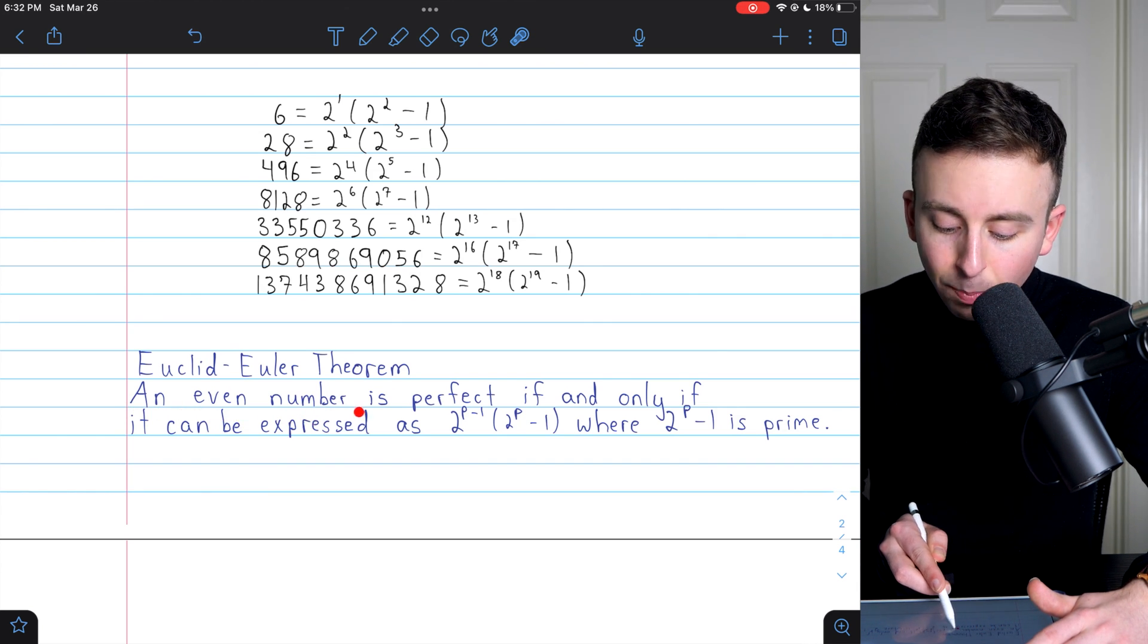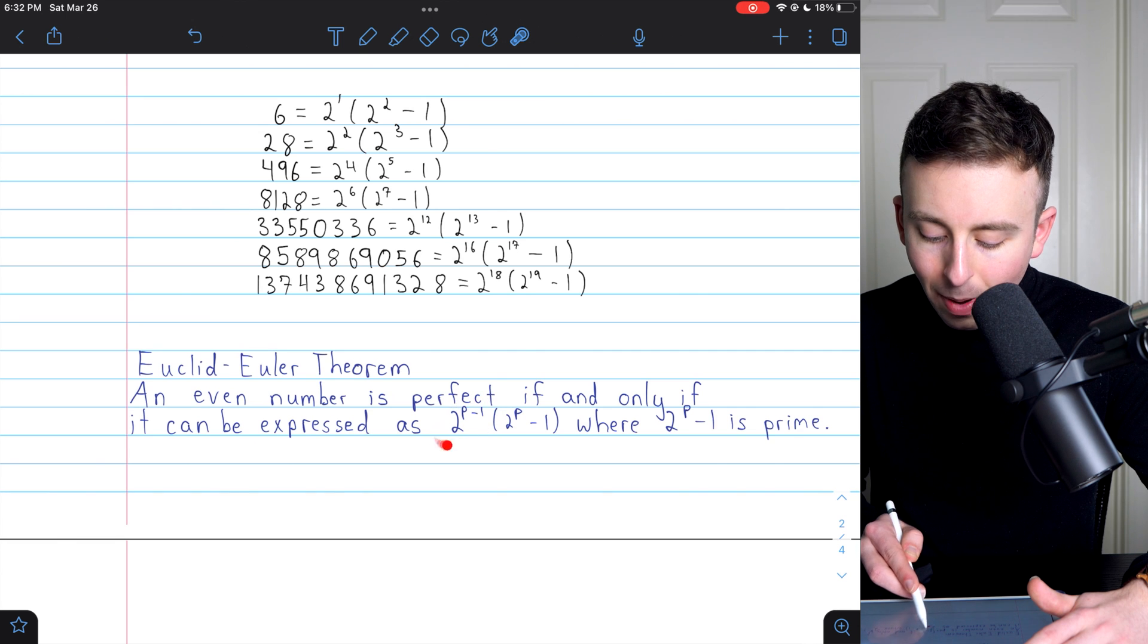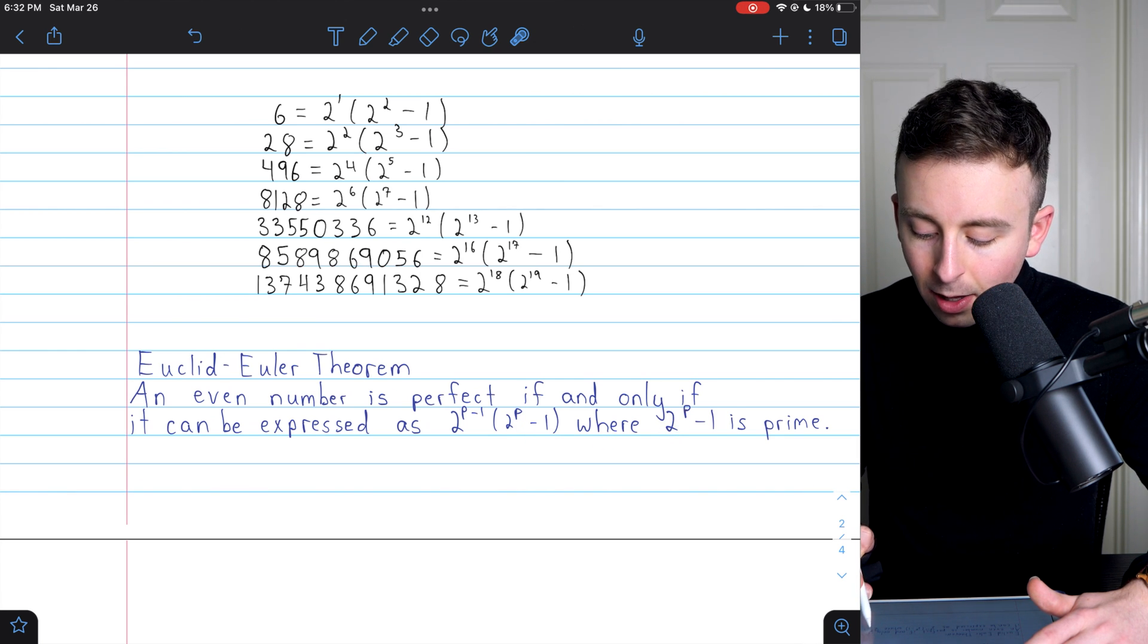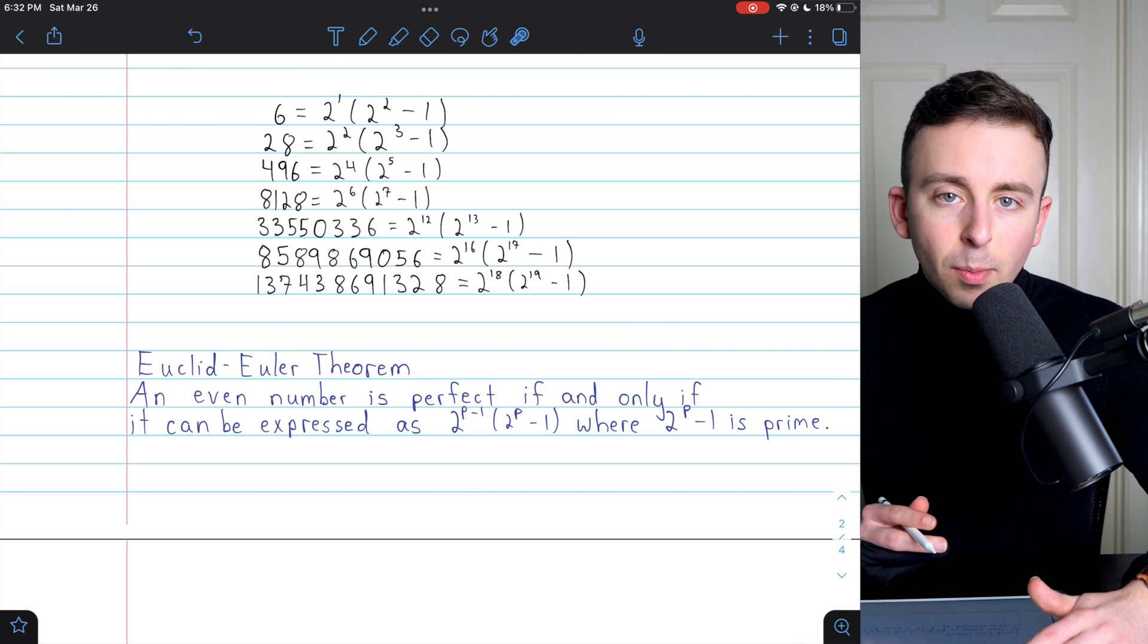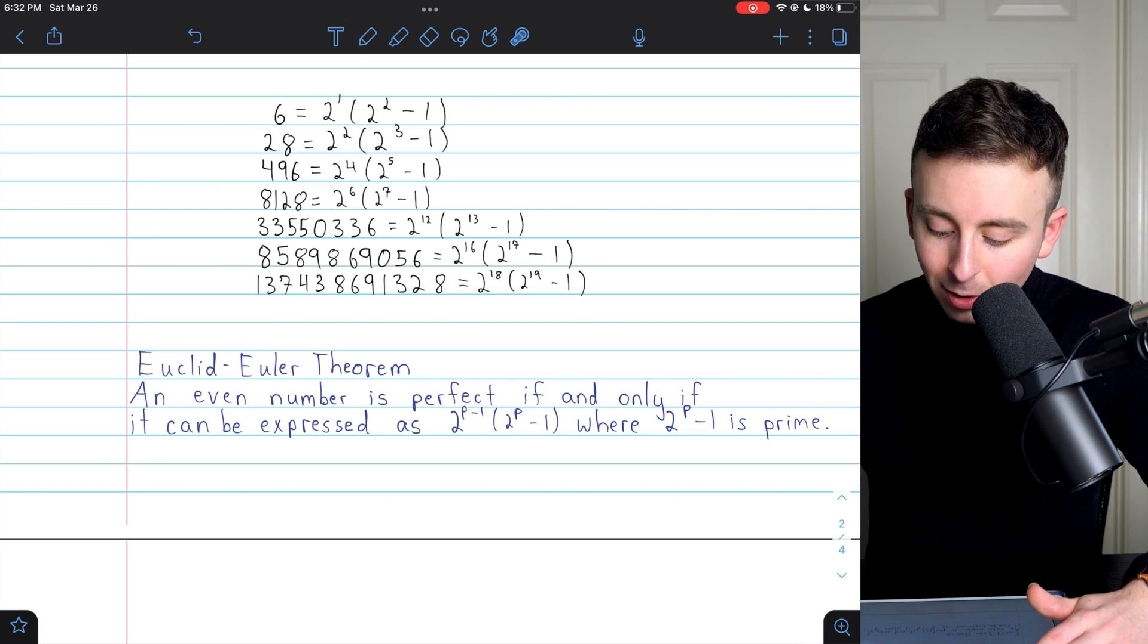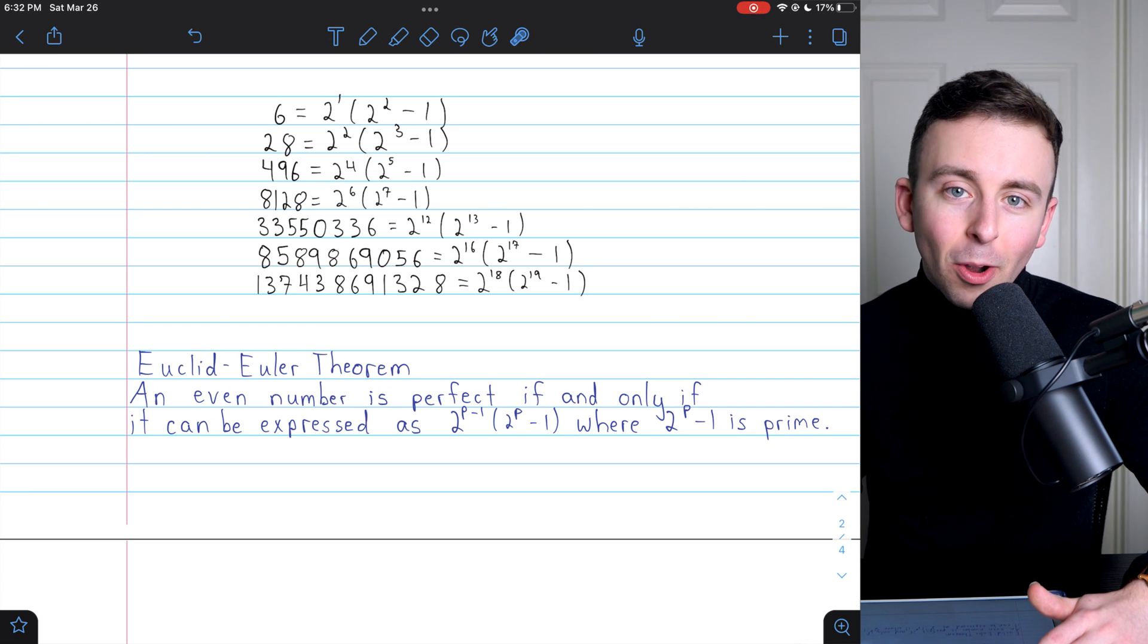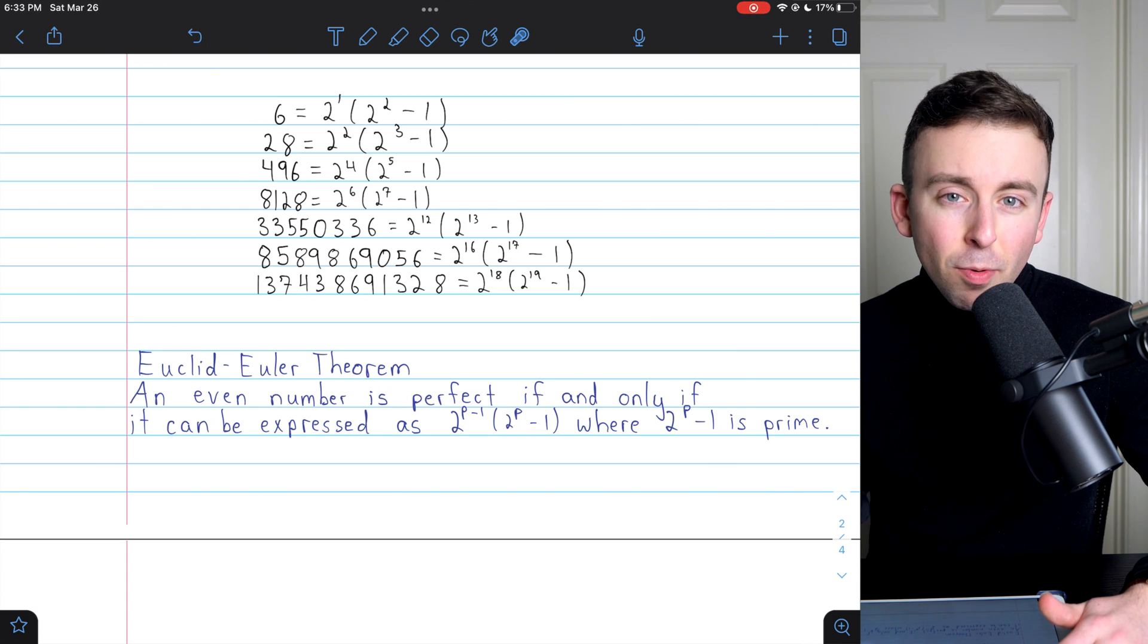Here's the theorem. An even number is perfect if and only if it can be expressed as 2 to the power of p minus 1 multiplied by 2 to the p minus 1, where 2 to the p minus 1 is prime. You may wonder, why do we have p in the exponent instead of a more common positive integer variable like n? And the answer is that, notice, 2 to the p minus 1 has to be prime, which will actually only happen when p is prime. So we put that exponent as p because it has to be prime.